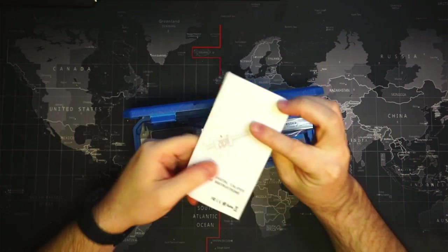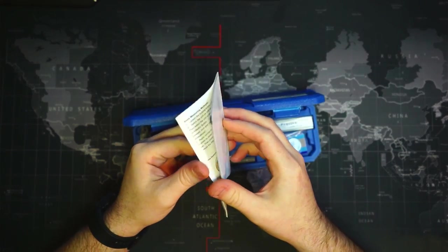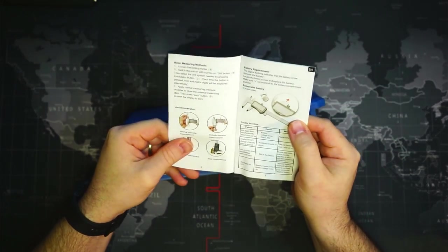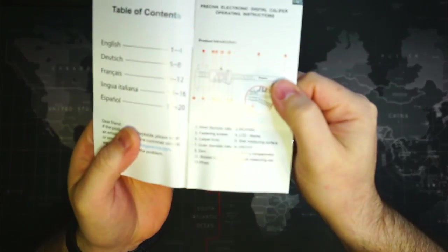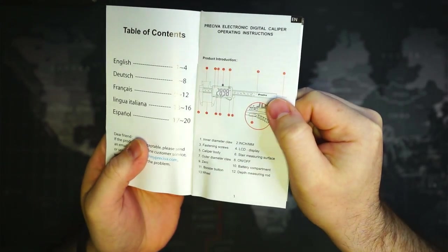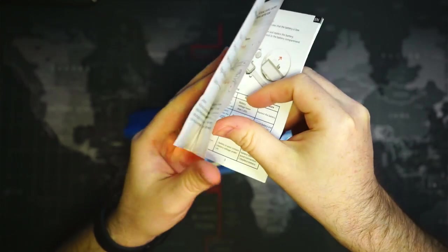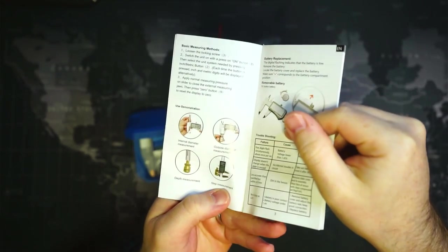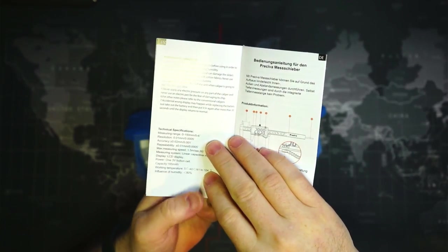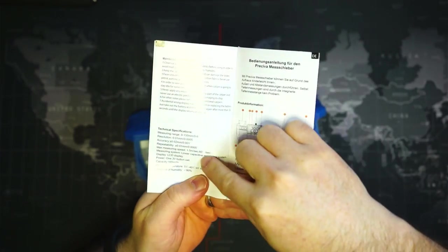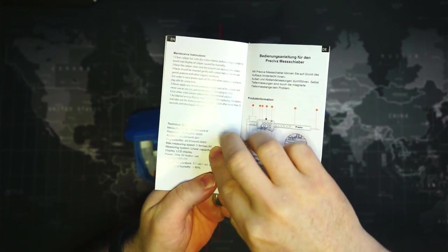Okay, so we got a manual. It's printed in color. And it looks like it's basic instructions on how to use it, and the maintenance, and its technical specifications.